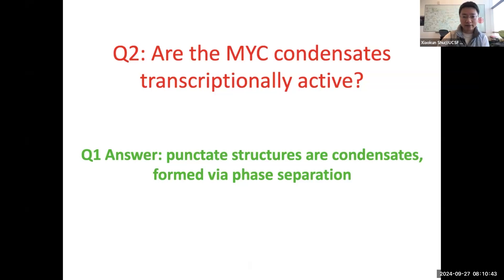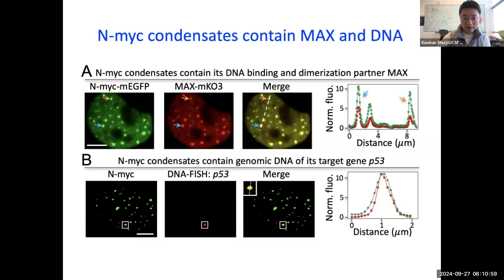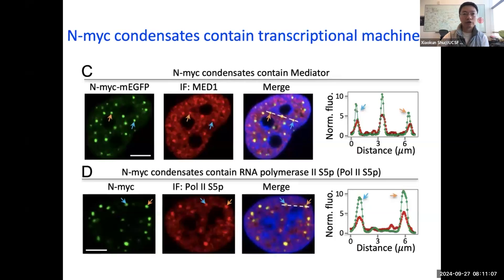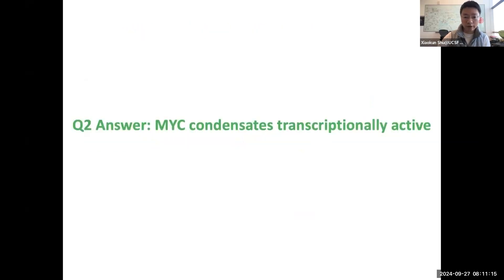This leads us to ask the second question: are these MYC condensates biologically active — do they have transcriptional activity? We found that MYC condensates contain MAX, which is necessary for DNA binding. They contain genomic target DNA of MYC, and they contain transcription machinery including the mediator and POL2, as well as nascent RNA. So the answer to the second question is that these MYC condensates are transcriptionally active.